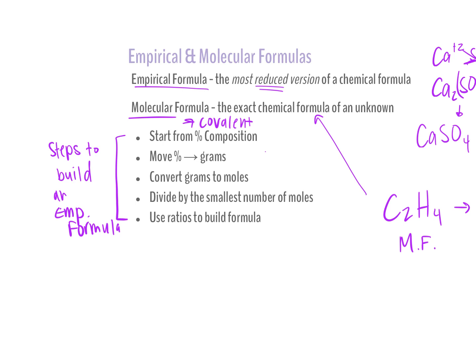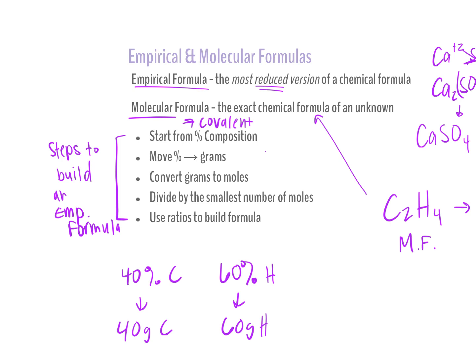If we start with percent composition, we're going to transition percent to grams. So if it says I'm 40% carbon and 60% hydrogen, I'm going to label those as 40 grams carbon and 60 grams hydrogen, acting as if my sample is 100 grams of substance. If the unknown values are already given in grams, I just start there without having to go through percent composition first.